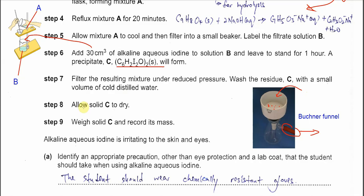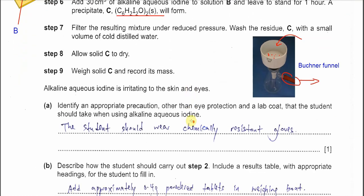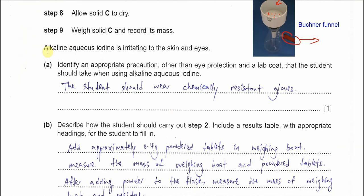After that, allow solid C to dry and weigh the solid C and record its mass for calculations later. Alkaline aqueous iodine is irritating to skin and eyes. Part A, identify an appropriate precaution other than eye protection, cannot use goggles, and lab coat, that the student should take when using this alkaline aqueous iodine. The best precaution the student can do now is to wear chemically resistant gloves. Try not to say gloves only, must put chemically resistant gloves.